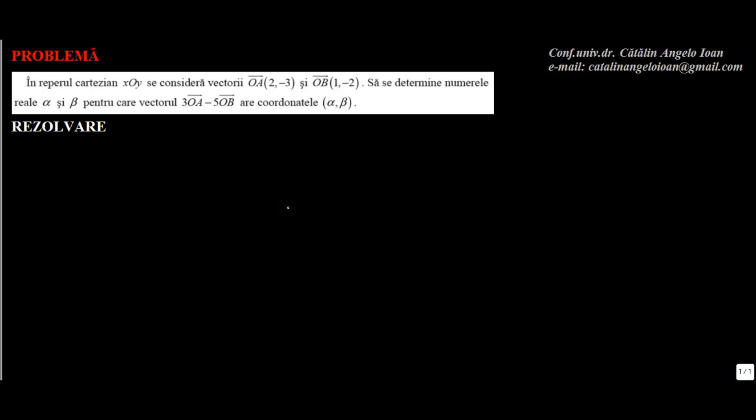Considerăm vectorul OA de coordonate 2 și minus 3, și OB de coordonate 1 și minus 2. Să se determine numerele reale alfa și beta pentru care vectorul 3 ori OA minus 5 ori OB are coordonatele alfa și beta. Vom avea coordonatele alfa și beta calculând 3 ori OA minus 5 ori OB.